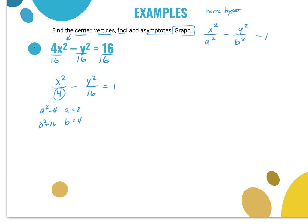A² is always over the first term. So in this problem, a² = 4, which means a = 2. And b² = 16, which means b = 4. For c, I know c² = a² + b² = 4 + 16 = 20, so c = ±√20 = ±2√5.